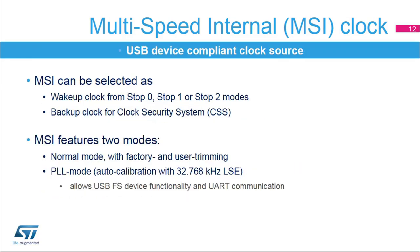The MSI can be selected as a wake-up clock from stop 0, stop 1, or stop 2 modes, and as the backup clock if an HSE failure is detected by the clock security system. The MSI has two modes: normal mode and PLL mode. PLL mode offers an automatic calibration feature with the low-speed external oscillator at 32.768 kHz. The accuracy of PLL mode allows the MSI to be used as a USB full-speed clock in device mode and as a UART peripheral clock. The MSI in normal mode is trimmed during production testing and can also be user-trimmed.